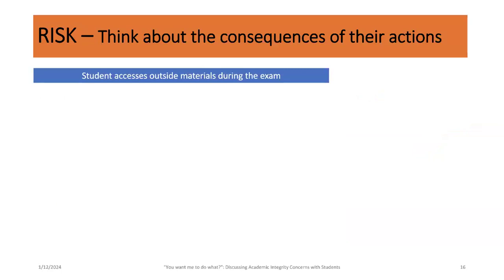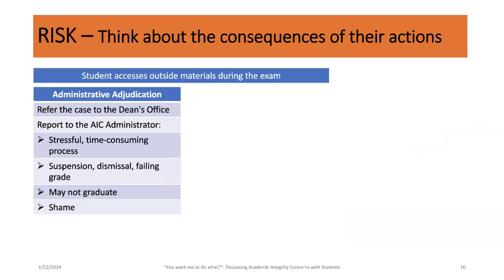Think about the consequences of their actions—there are two forces. One is the student's access to outside material during the exam. The first consequence is administrative adjudication: your life is going to get difficult. You'll have to defend yourself before a committee, a panel. There could be suspension, dismissal, definitely a grade impact, and you may not graduate if this is the class you need. I also mentioned shame—you're going to have to go through this process not knowing the outcome. I wanted them to know I'm not casting judgment, but here are the real stakes. The other option is faculty jurisdiction: I could let you retake the exam, correct the exam, or take a new exam.